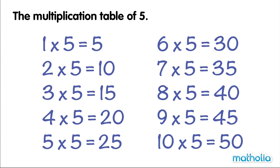The multiplication table of five. One five is five. Two fives are ten. Three fives are fifteen. Four fives are twenty. Five fives are twenty-five.